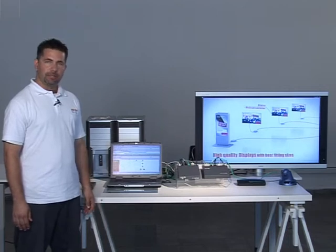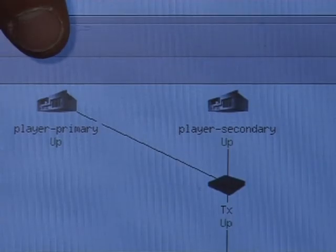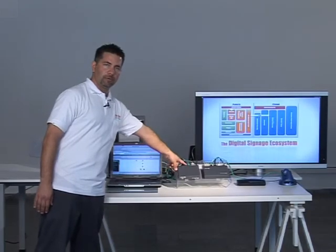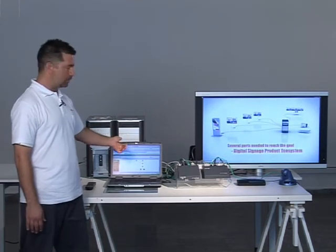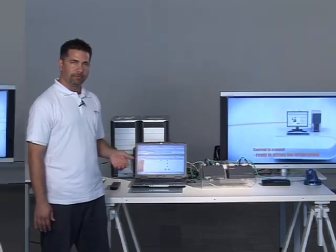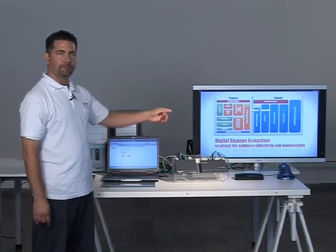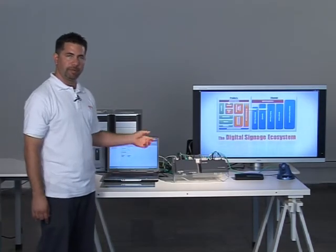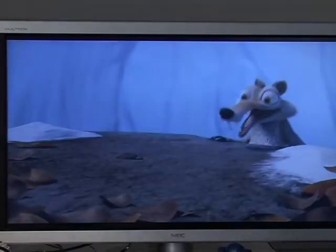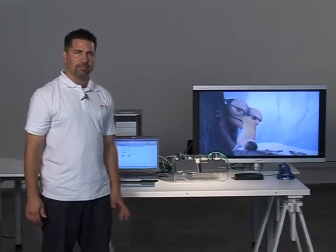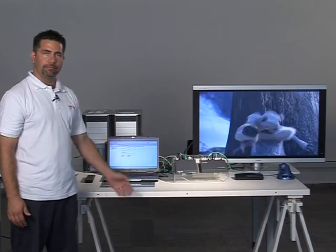In the DS Vision Digital product, we have the possibility of connecting two players in parallel to the transmitter. You can see we have two players connected — one with HDMI and the second with DisplayPort. As soon as the primary player goes down, I can remotely switch between players and enable continuous playback. In the current setup, the primary player is playing the video on screen. I will now switch to the secondary player using the management interface. I have now activated the secondary player — as you can see, different content is playing from a different player. This switchover can be done remotely to enable continuous playback.